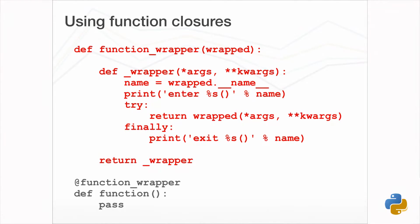The nested function doesn't get passed the wrapped function explicitly, but it still has access to it via the arguments given to the outer function call. This does away with the need to create a class to hold the wrapped function, and that's why it is a convenient and generally more popular approach.